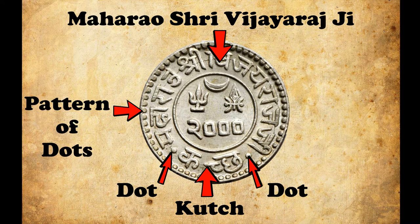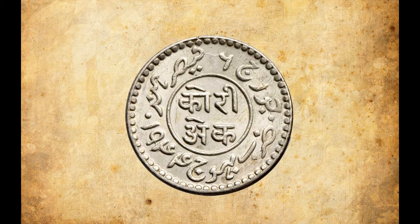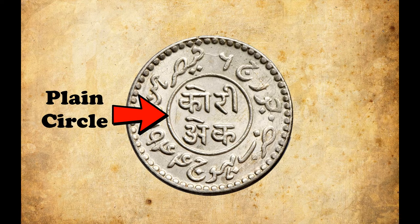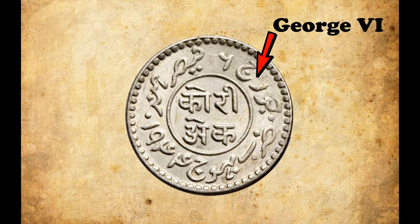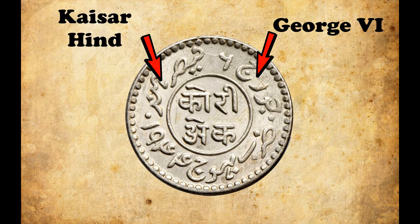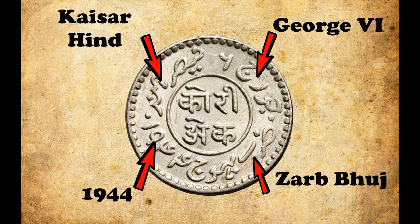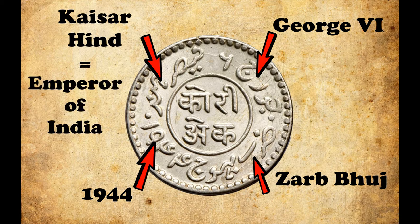A pattern of dots can be observed on the outer edge of the obverse side. On the reverse side, there is also a plain circle in the center. Inside that, 'Koryeke' is written in Devanagari legend. Outside the circle, 'George VI, Kaisar Hind, Zarb Buj, 1944' is written in Persian legend, which means George VI, Emperor of India, Struck at Bhuj, 1944 — the Christian year of minting.